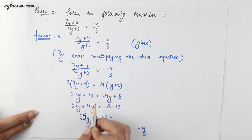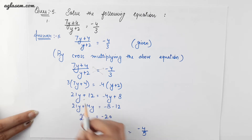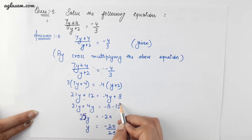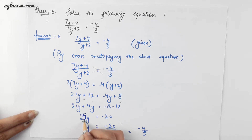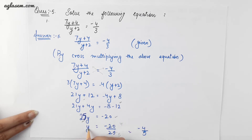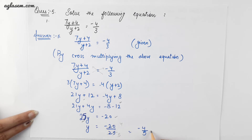Solving the equation and making all the variable terms on one side and constant terms on the other, we will get 25y is equal to minus 20. Therefore y is equal to minus 20 by 25, and cutting all the numbers by 5 we get minus 4 by 5 as the value of y.